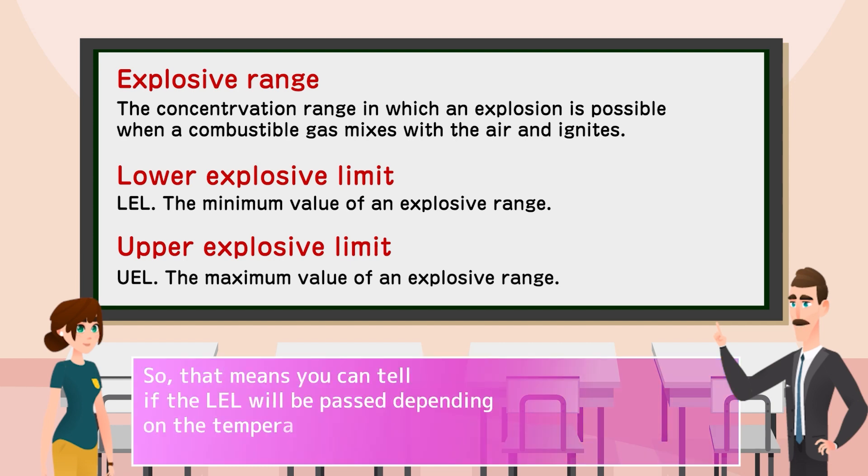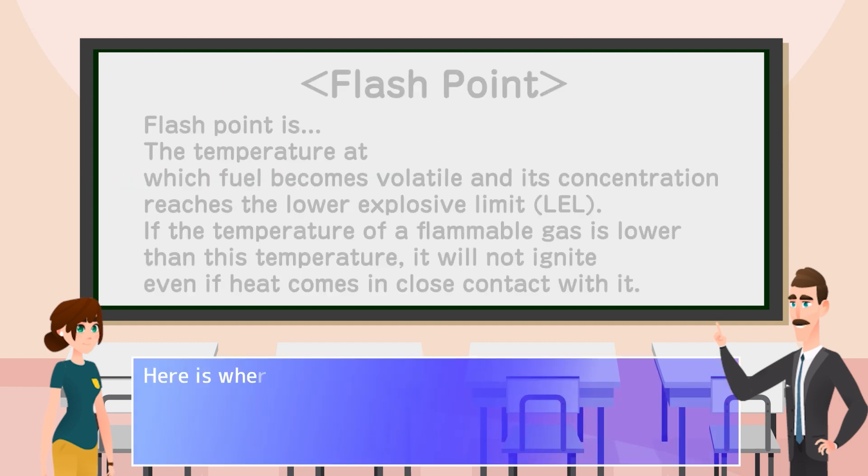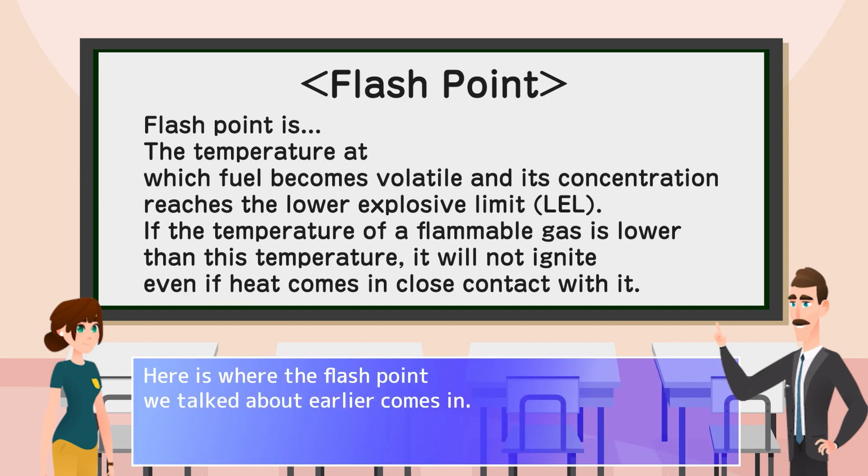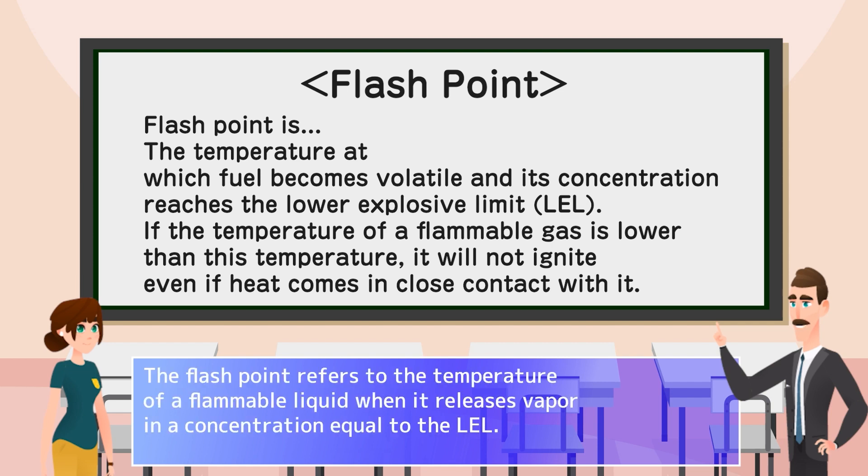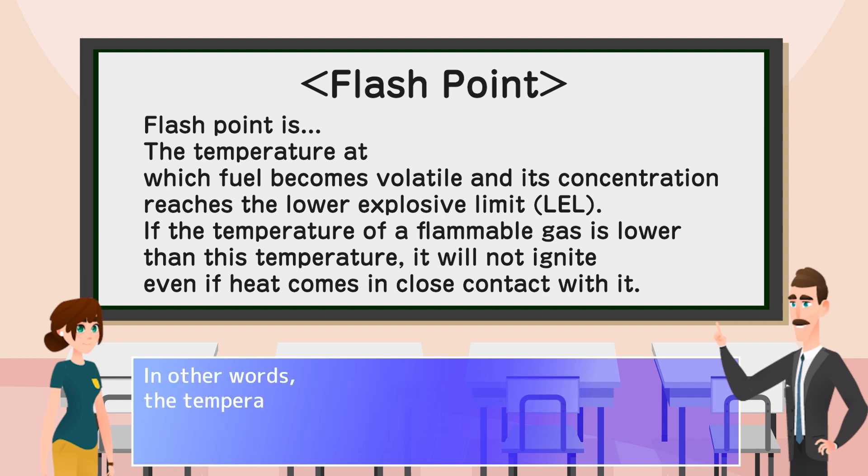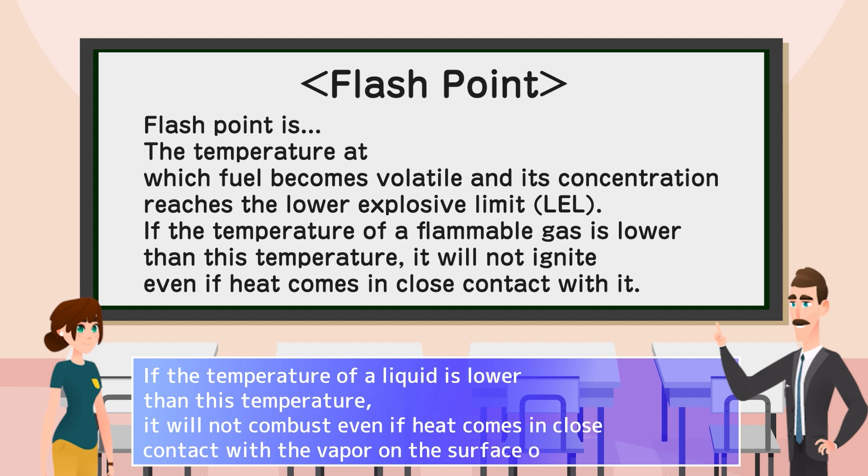So, that means you can tell if the LEL will be passed depending on the temperature. Here is where the flash point we talked about earlier comes in. The flash point refers to the temperature of a flammable liquid and it releases vapor in a concentration equal to the LEL. In other words, the temperature required for the flammable liquid to combust because of the heat. If the temperature of a liquid is lower than this temperature, it will not combust even if heat comes in close contact with the vapor on the surface of the liquid.